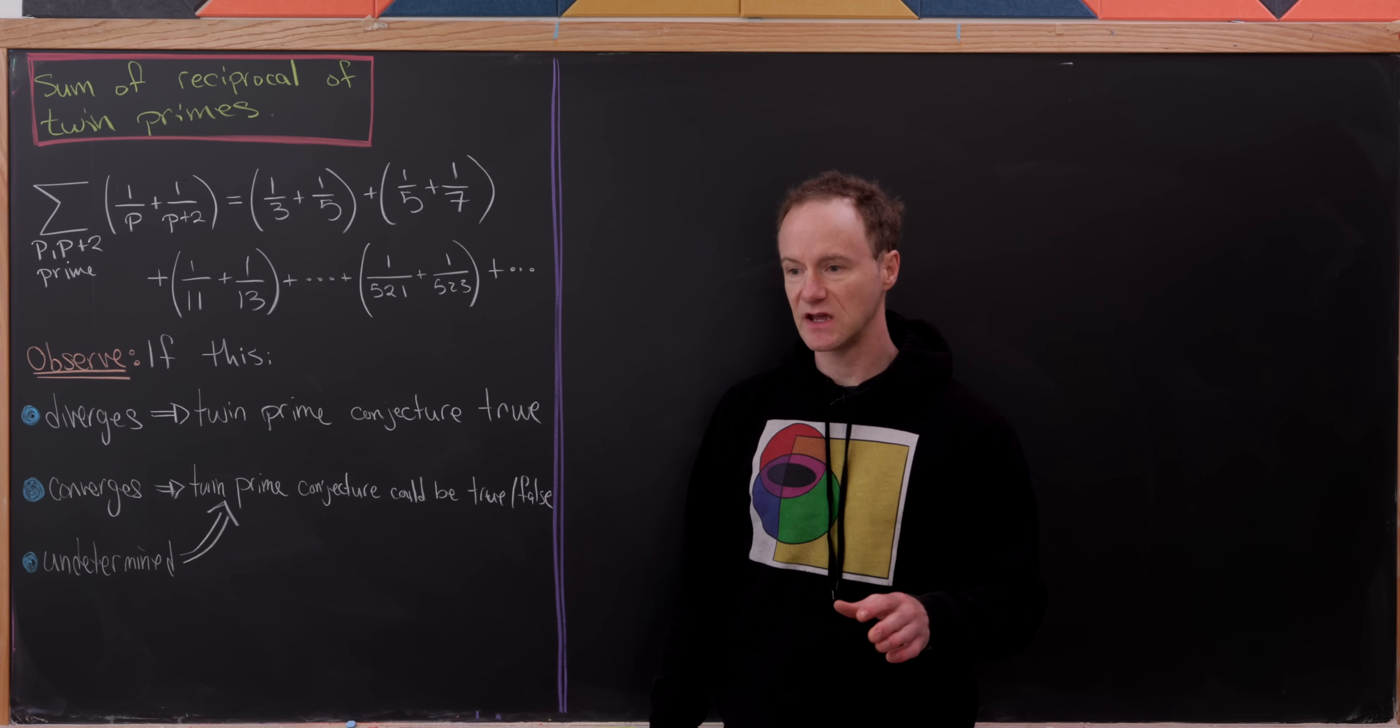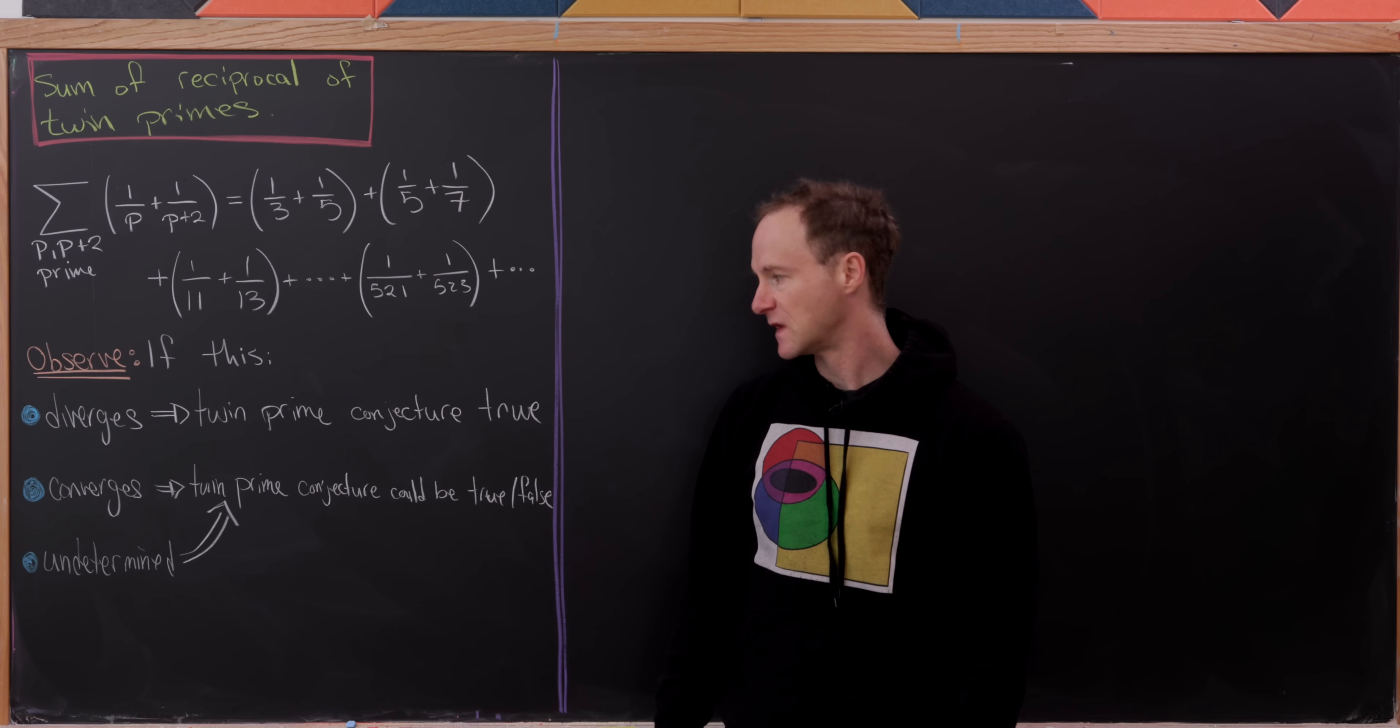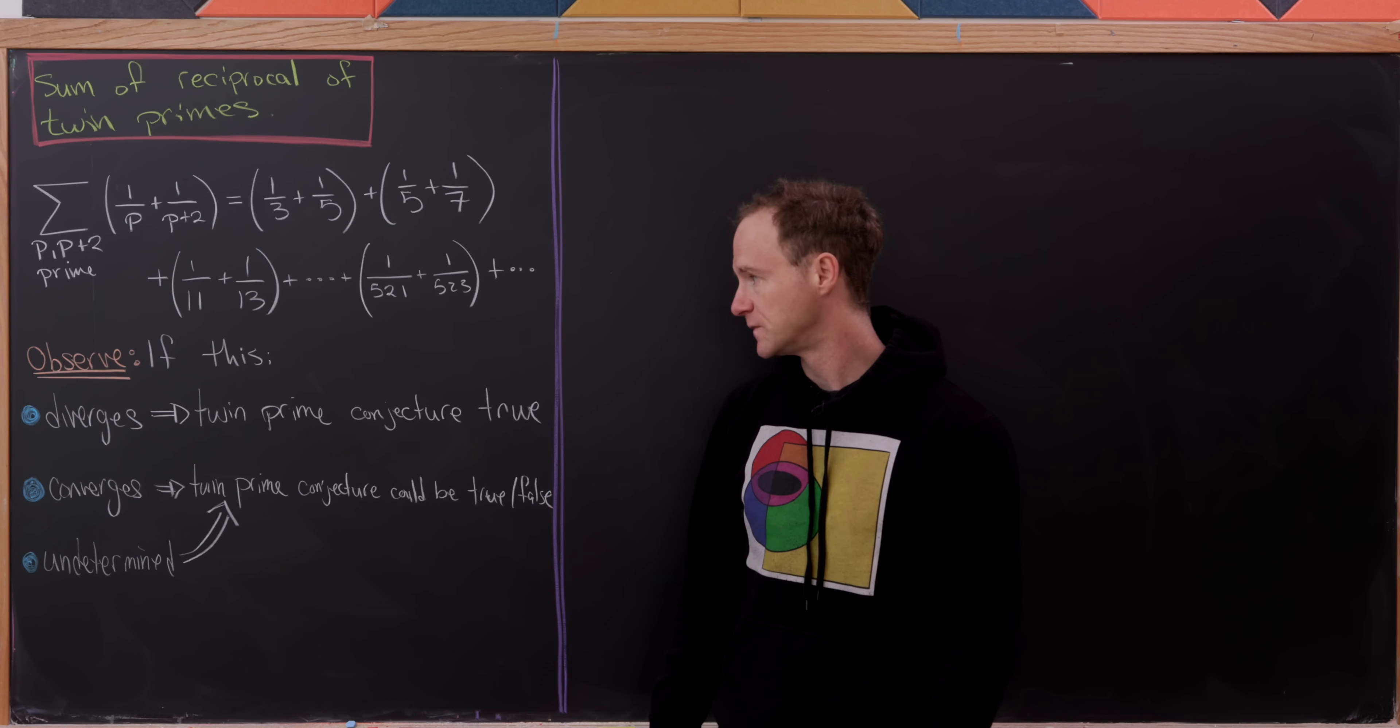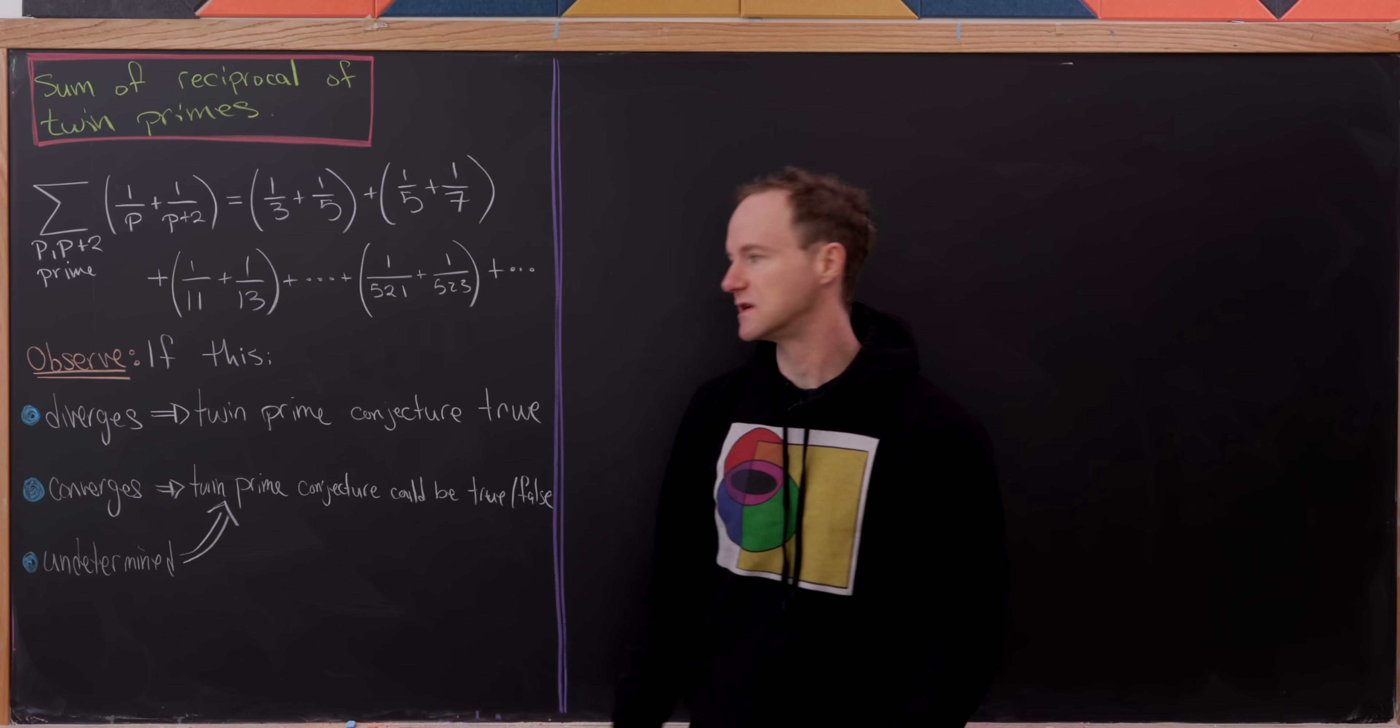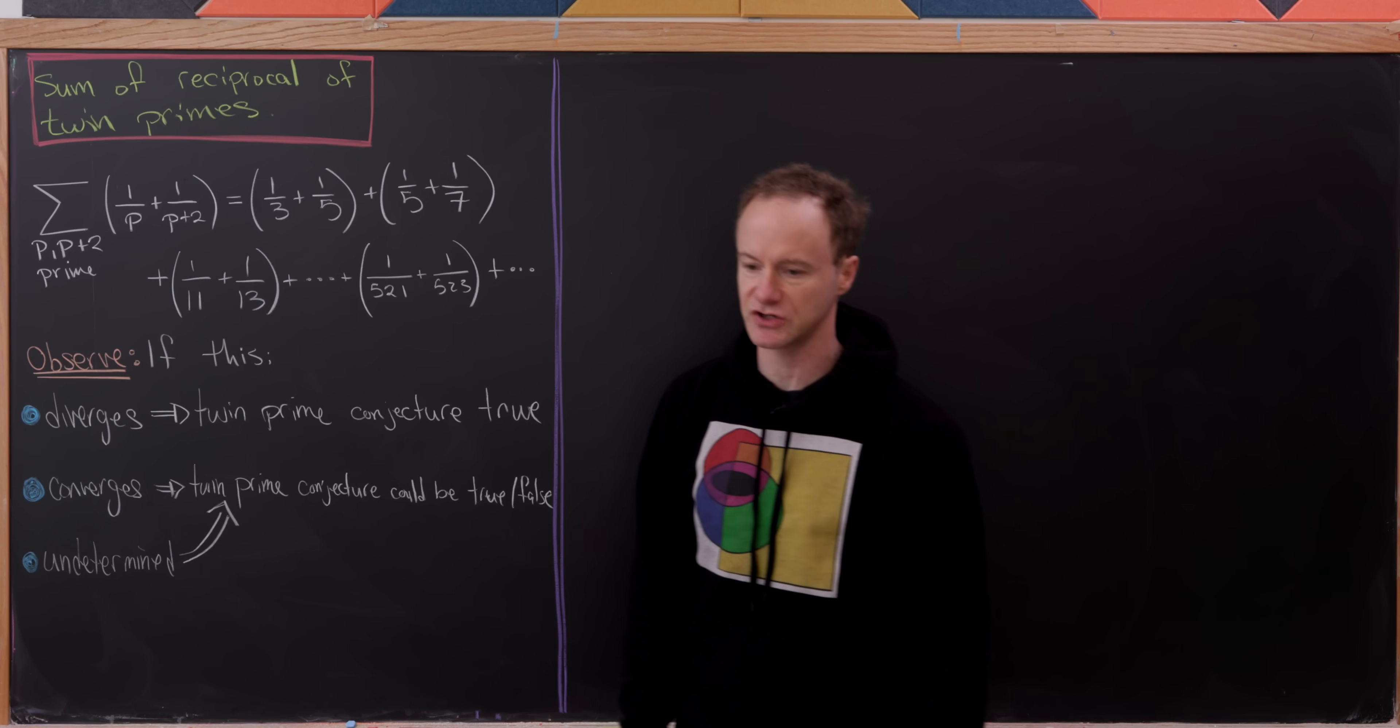So this series could converge or it could be undetermined so far whether it converges or diverges. Because if it's convergent, then it could have finitely many or infinitely many terms. And if it's undetermined, well everything is up in the air. So which one is it?